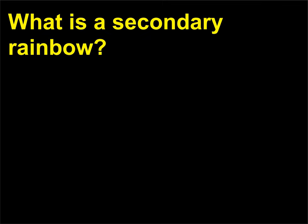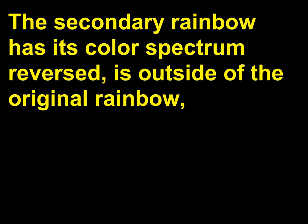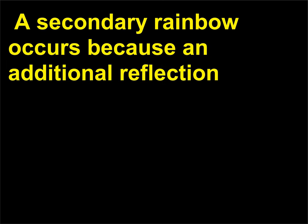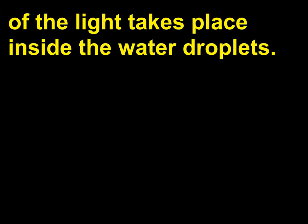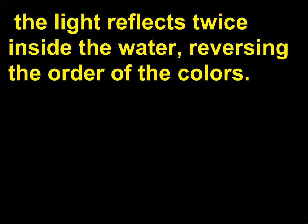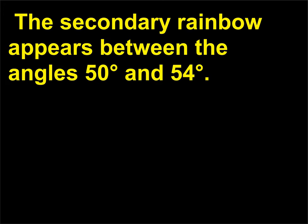What is a secondary rainbow? The secondary rainbow has its color spectrum reversed, is outside of the original rainbow, and is significantly dimmer than the primary rainbow. A secondary rainbow occurs because an additional reflection of the light takes place inside the water droplets. Instead of reflecting once in the water droplet, the light reflects twice inside the water, reversing the order of the colors. The secondary rainbow appears between the angles 50 degrees and 54 degrees.